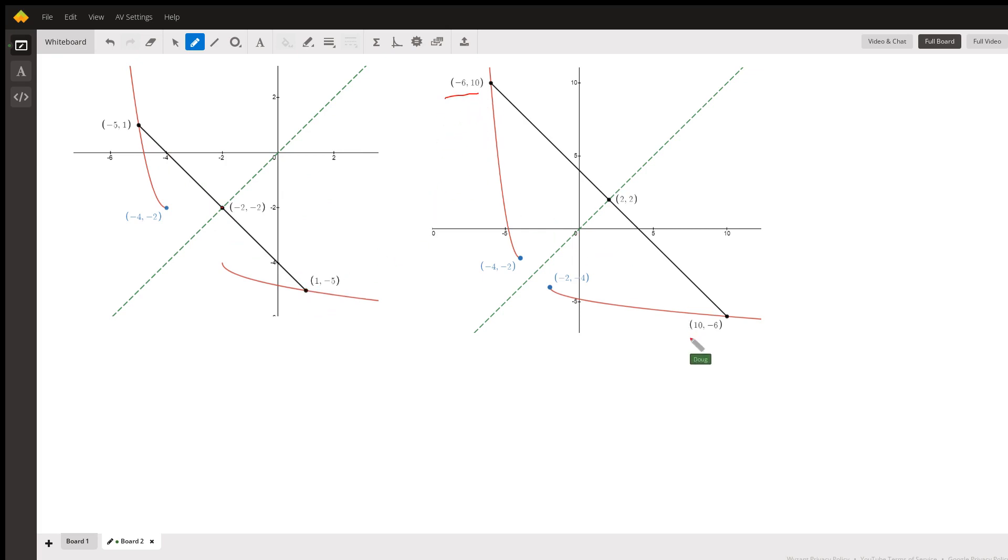And here's another example, negative 6, 10, interchange x and y, 10, negative 6. And the line y equals x is the perpendicular bisector of the points joining those two points, of the line segment joining those two points.